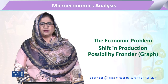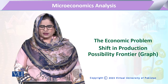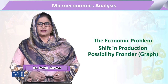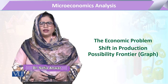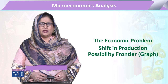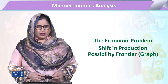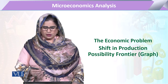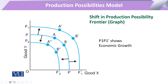We will explain the shift in the production possibility frontier in detail with the help of a graph. The production possibility frontier can shift either inward or outward. In the graph, this is our basic level of production possibility frontier, and once it moves to the right side, that movement is called the outward shifting.